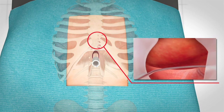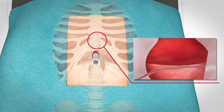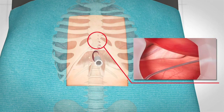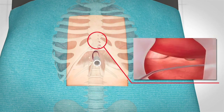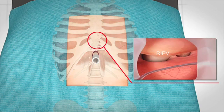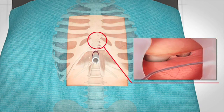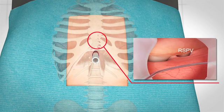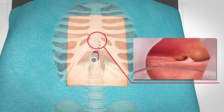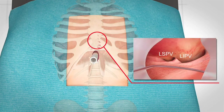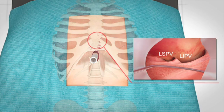That allows you to insert the cannula and be able to create that space so you can visualize the different structures such as the IVC, the right inferior pulmonary vein, the right superior pulmonary vein, and the left inferior pulmonary vein.